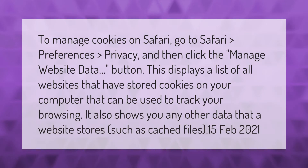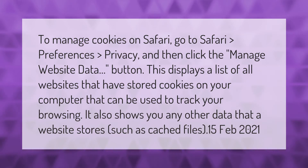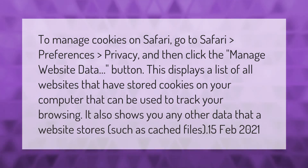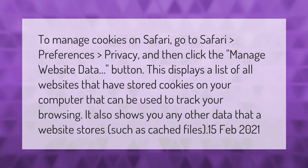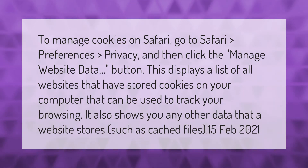To manage cookies on Safari, go to Safari Preferences, then Privacy, and click the Manage Website Data button. This displays a list of all websites that have stored cookies on your computer that can be used to track your browsing. It also shows any other data a website stores, such as cached files.